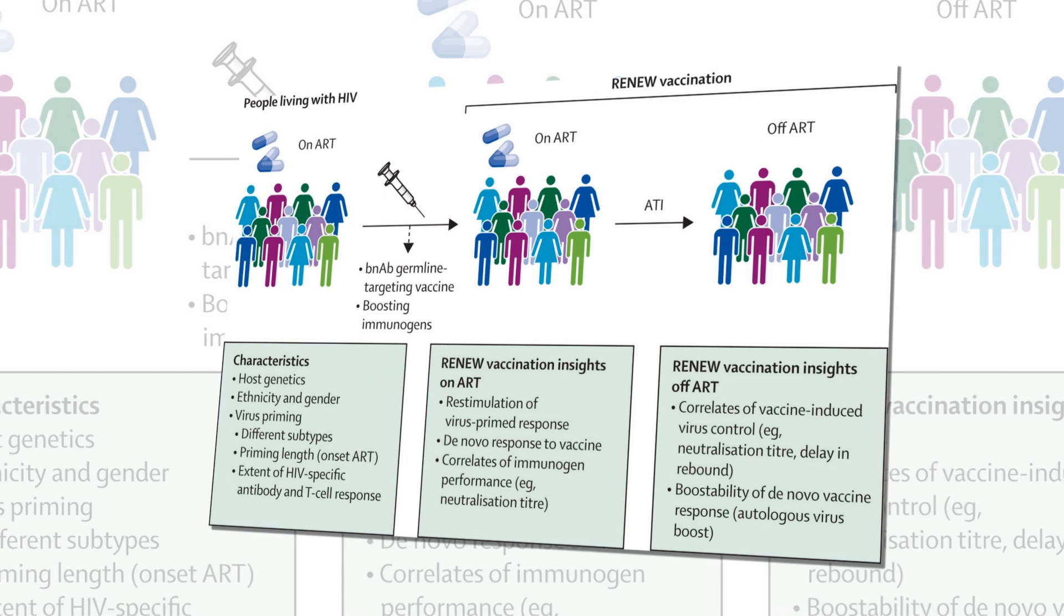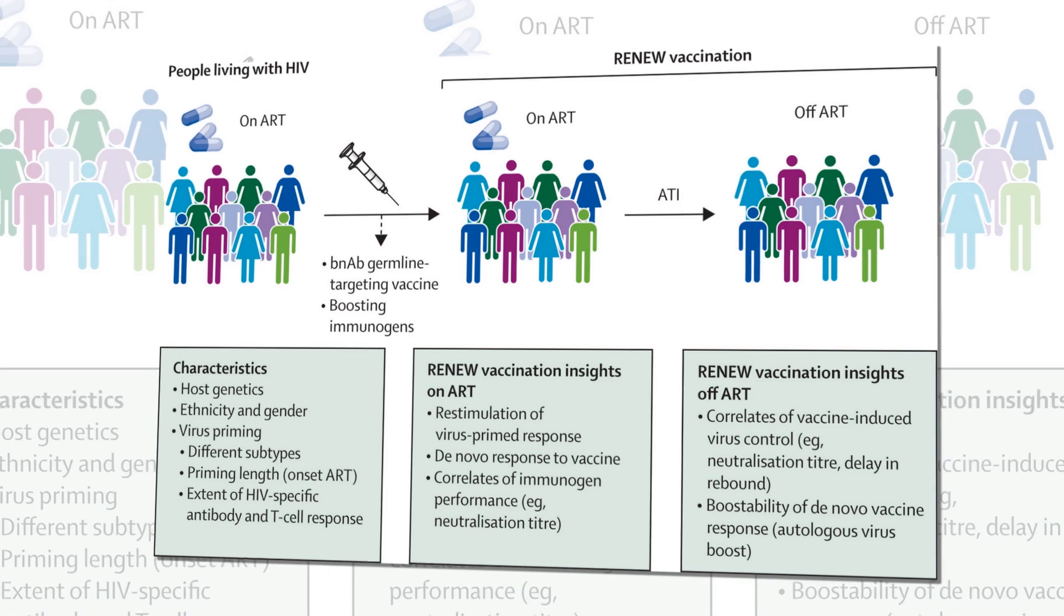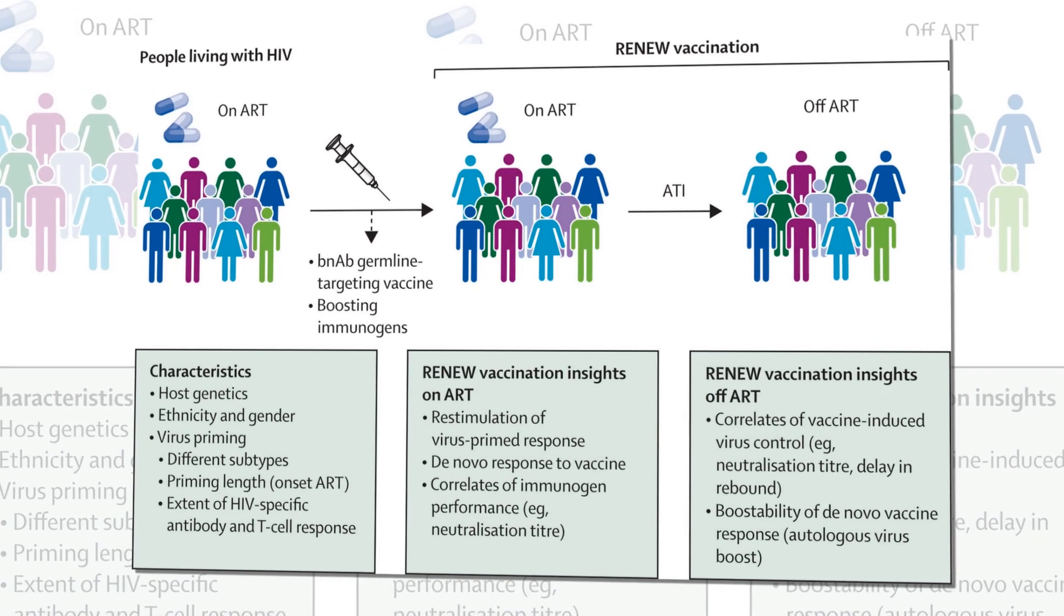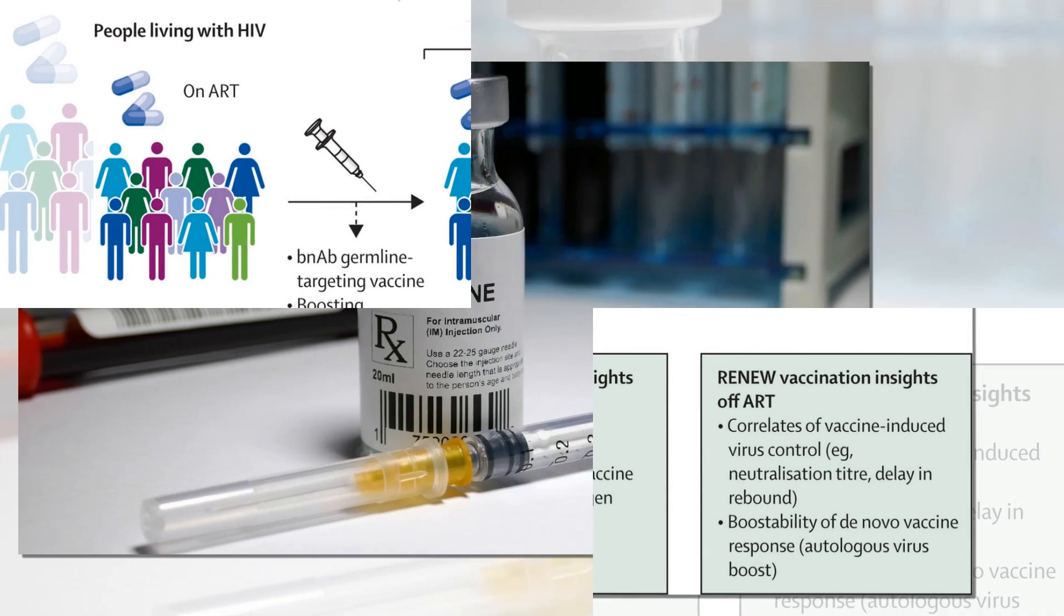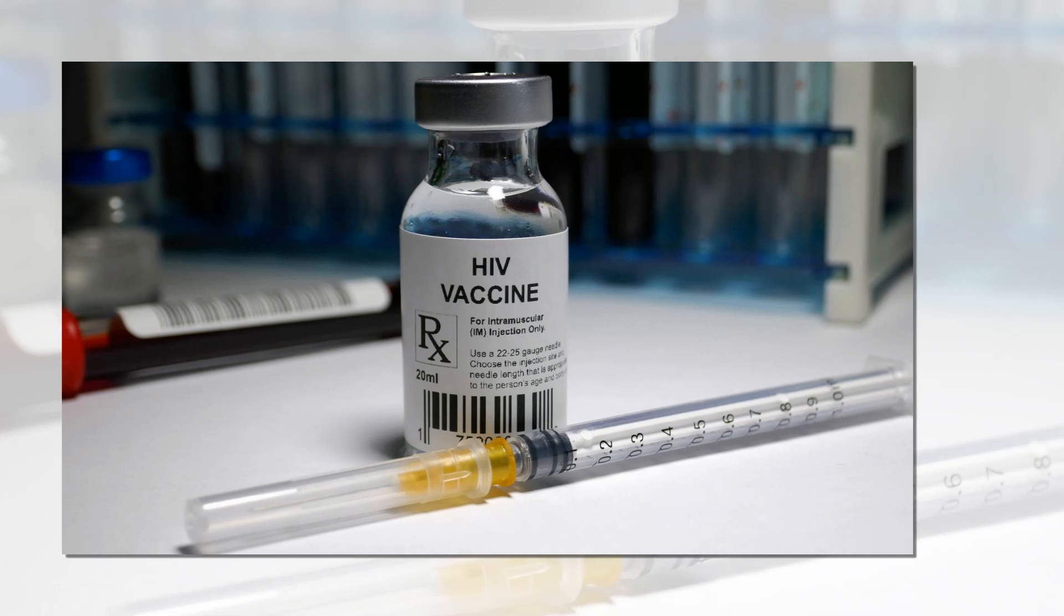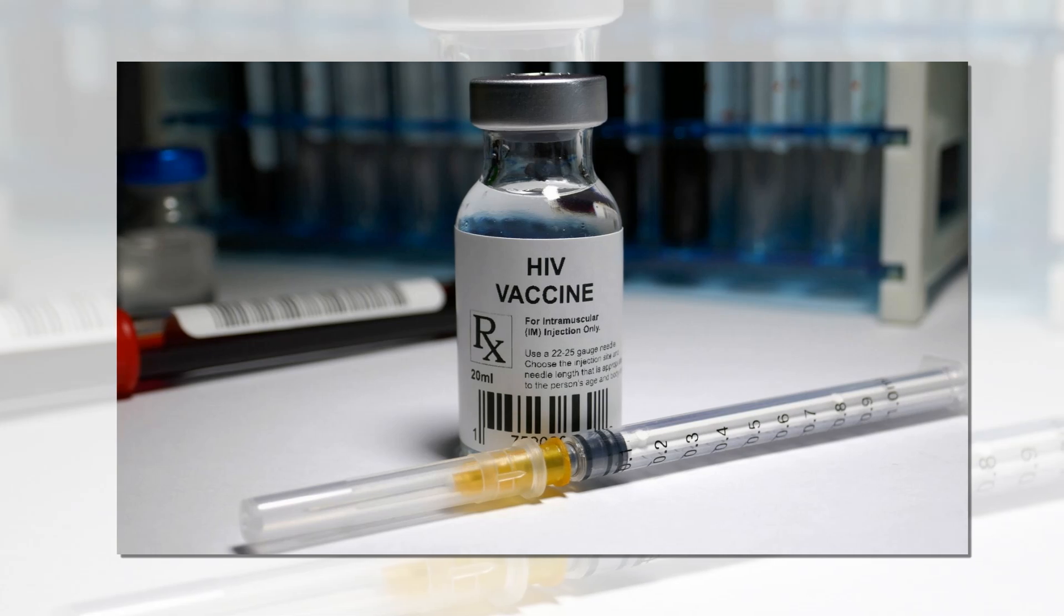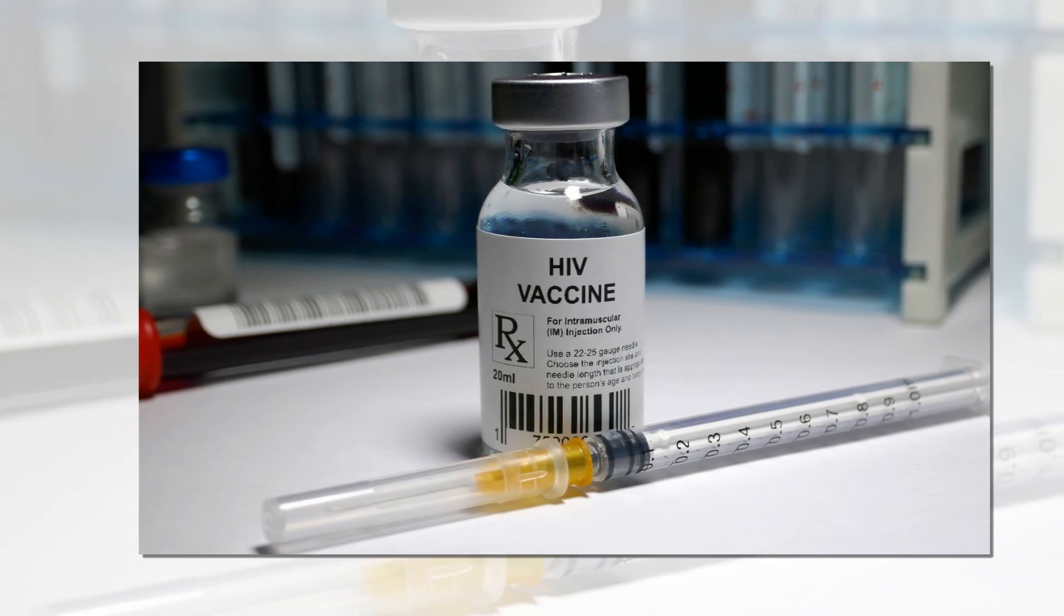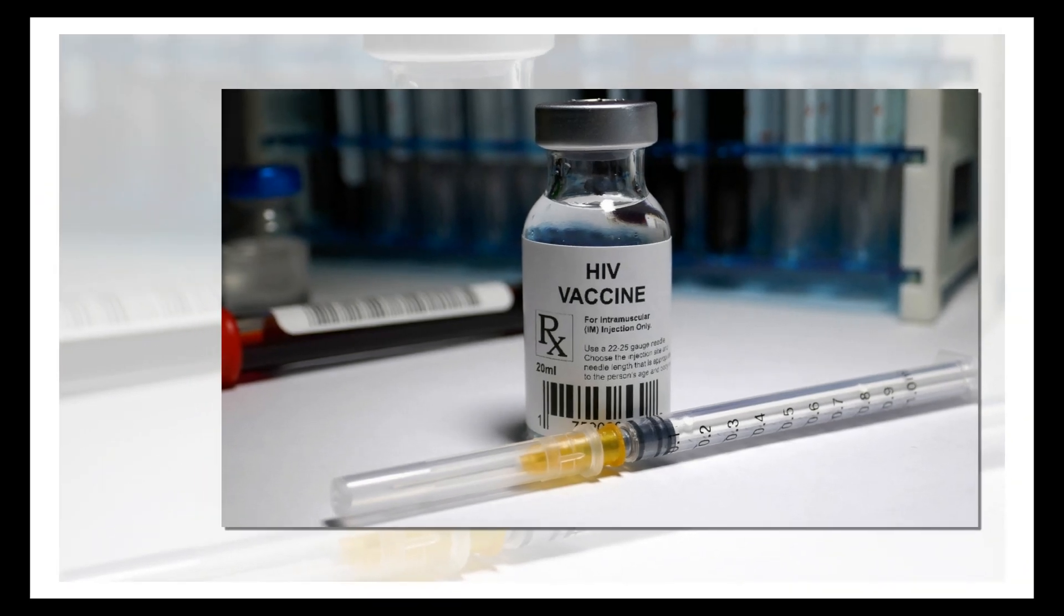Two other studies published in Science describe the development of a different immunogen dubbed N332-GT5, designed to elicit the production of B cells capable of making another bnAb called BG18. Prior HIV prevention and treatment studies have shown that combining different bnAbs will likely be necessary to prevent viral escape.